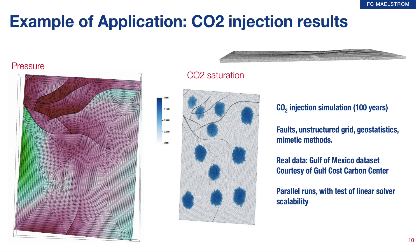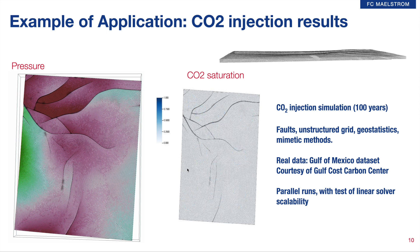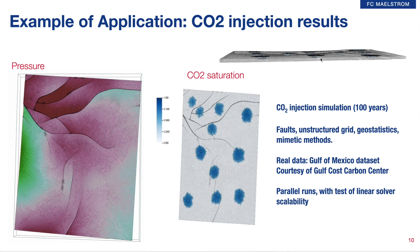Moving away from ideality, here is an example using real reservoir data — 100 years of CO2 simulation. This is a reservoir in the Gulf of Mexico. The dataset was built with the help of UT Austin Gulf Coast Carbon Center. We have faults, the grid is unstructured, properties are geostatistical, and we used mimetic discretization methods. As you can see, we can evaluate here the pressure fronts and the saturation changes over time. This kind of information would be helpful to design a CO2 injection operation.